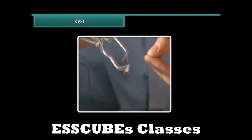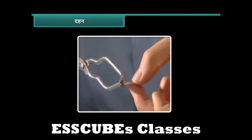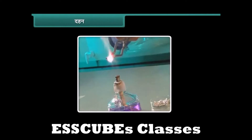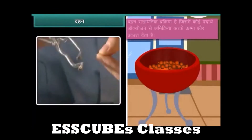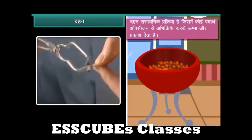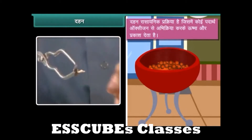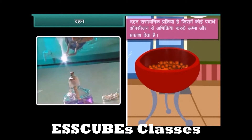रोहन एक सरल क्रियाकलाप कर रहा है — वह ज्वाला में मैग्नीशियम की तार जला रहा है। ध्यान से देखें: मैग्नीशियम ऑक्साइड के साथ-साथ उष्मा और प्रकाश भी निर्मित हो रही हैं। अब जलते हुए कोयले को देखें — यह वायु में जल रहा है और कार्बन डाइऑक्साइड, उष्मा व प्रकाश निर्मित कर रहा है। दोनों उदाहरणों में पदार्थ वायु की ऑक्सीजन से अभिक्रिया करके उष्मा व प्रकाश का निर्माण करते हैं — यह प्रक्रिया दहन कहलाती है।